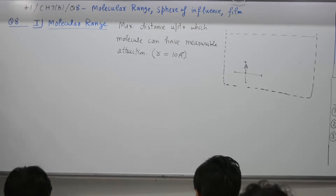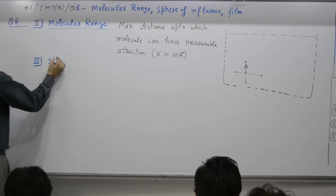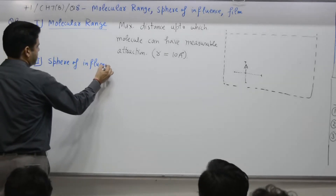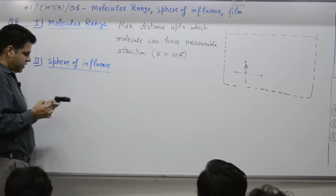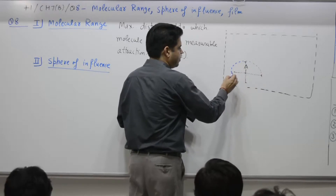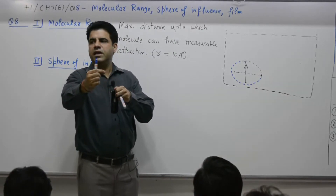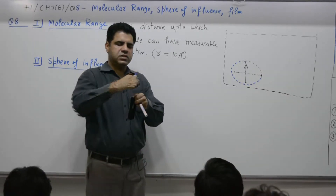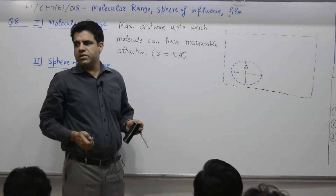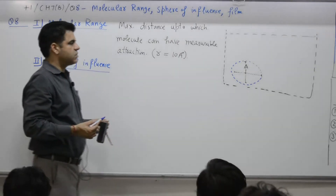The second concept is sphere of influence — that is the sphere up to which you can have an effect. When you say the range is 10 Angstrom in all directions — 10 Angstrom, 10 Angstrom, 10 Angstrom — all directions are 10 Angstrom from one molecule. If you join all these points at 10 Angstrom, the geometry and shape is a sphere.